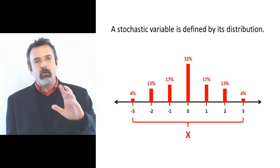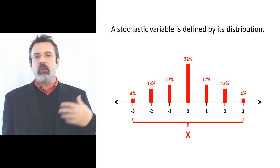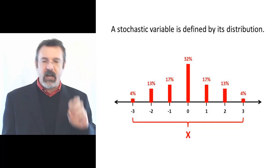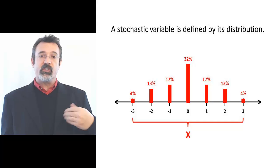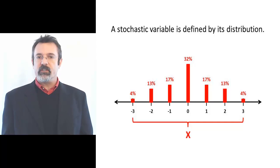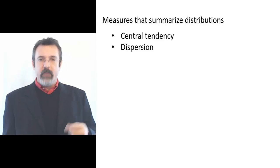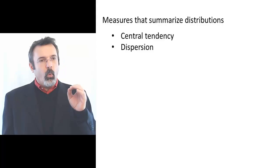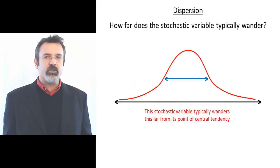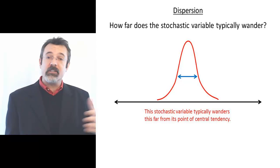The probability distribution summarizes everything we need to know about the stochastic variable. But it's difficult to talk about because typically it's a complex function. So often what we will do is use summary measures or summary statistics. Two of these that we frequently use are measures of central tendency and measures of dispersion. Measures of central tendency answer the question: where is this stochastic variable typically located? Measures of dispersion answer the question: as this stochastic variable moves around, how far does it typically wander?